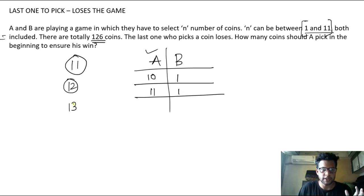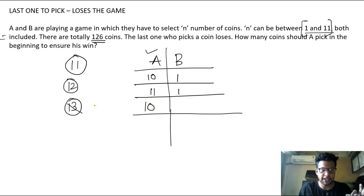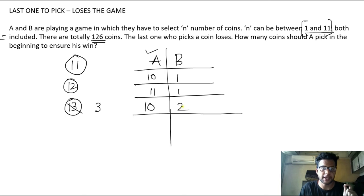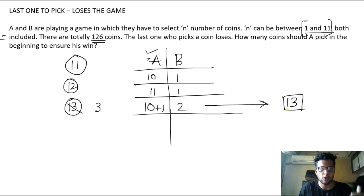What happens when there are 13 coins? Let's say A picks 10 coins — 3 remain. B plays smartly and picks only 2 coins. Now the remaining 1 coin has to be picked up by A, so A loses. You can try various combinations, but you will find that whenever there are 13 coins, the player who is starting the game will always end up losing.